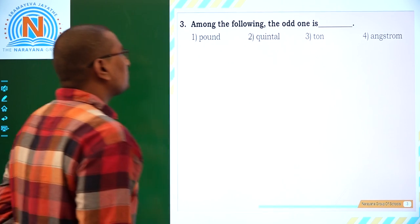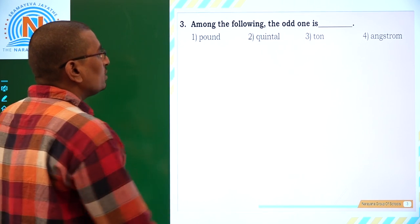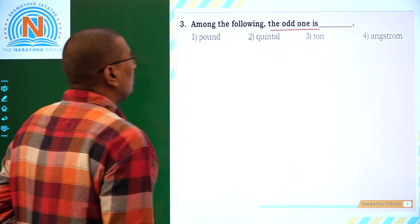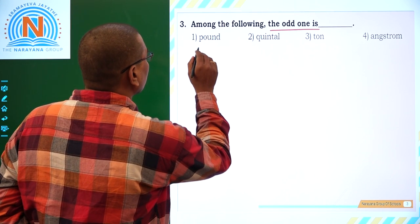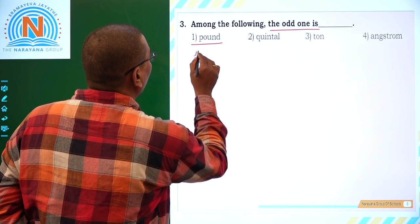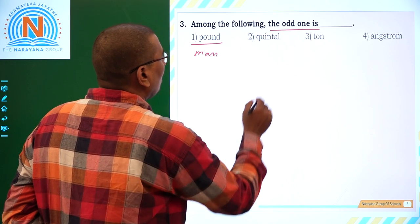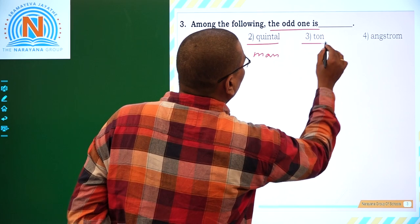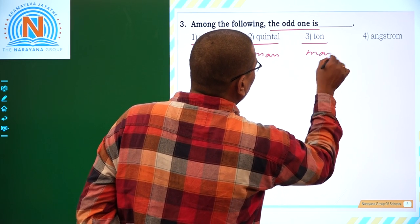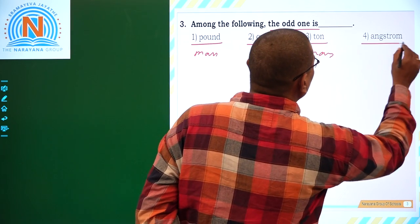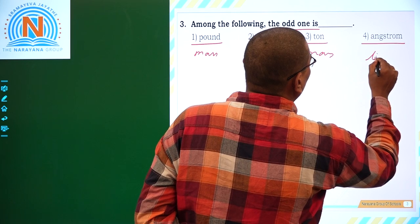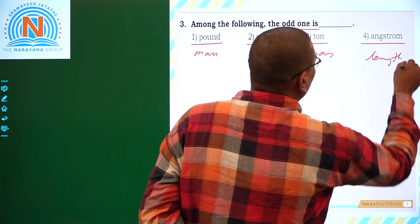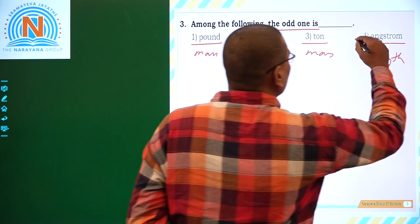Next one: Among the following, the odd one is... If you see the options here, pound is mass, quintal is also mass, ton is mass, whereas angstrom is a distance, a length. So the odd one is angstrom.